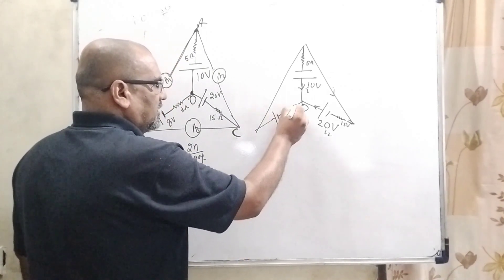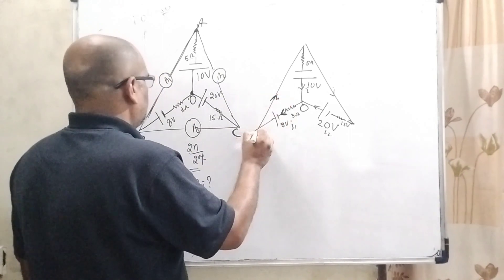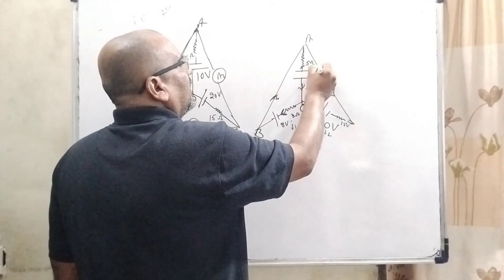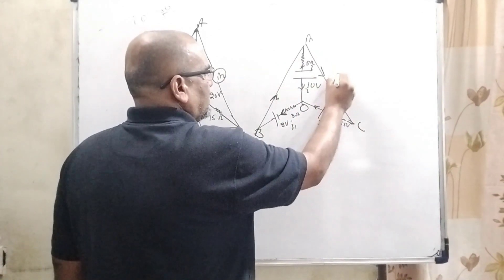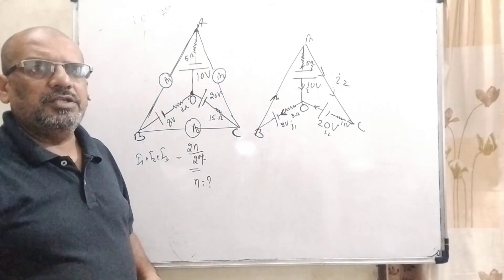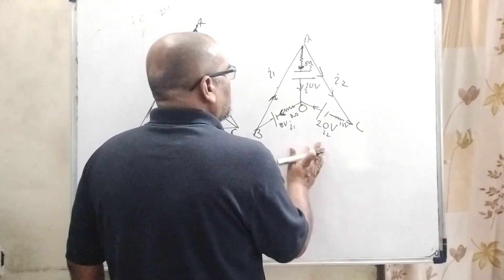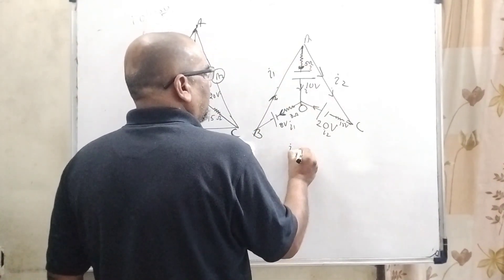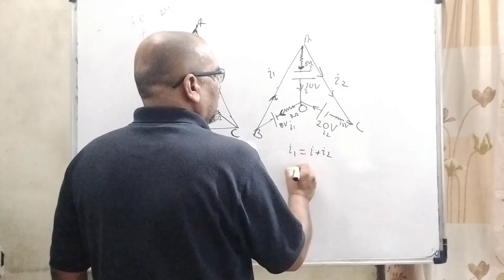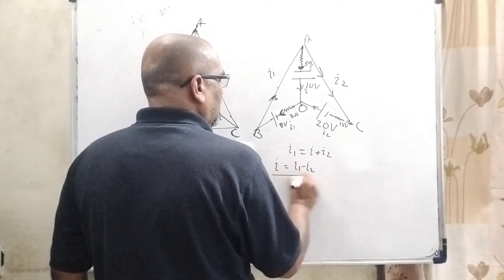Let us consider the direction of current going from B to A — that current is I1 — and from A to C — that current is I2. Using Kirchhoff's junction law, you can see that I1 is the incoming current and I and I2 are the outgoing currents. So I can be written as I = I1 − I2.